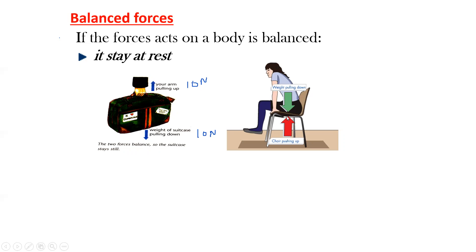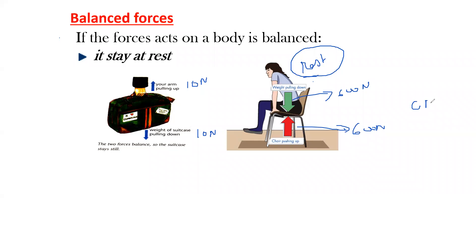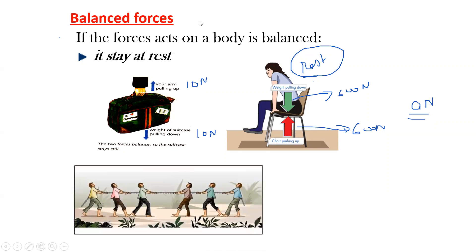Similarly, a person sitting on a chair and at rest — how? Because there is no resultant force; the forces are balanced. The weight of the person acts downward and the chair pushes the person upward. For example, if the weight of the person is 600 newtons downward, the chair pushes 600 newtons upward. The resultant force on the person is zero, which is why the person remains at rest on the chair.